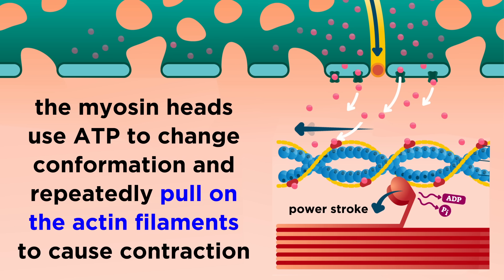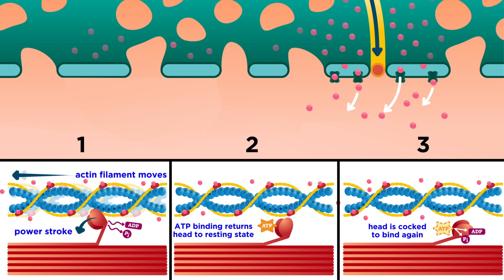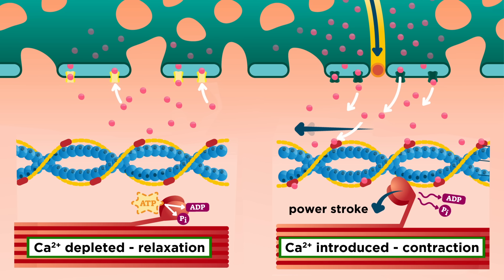In this process, the myosin heads will pivot and bend, pulling the actin filament along and using ATP in the process. The two positions possible for the heads allow it to pull, detach, change position, bind, pull, detach, and so forth many times, until contraction is complete. As calcium levels deplete, troponin returns to its original shape, tropomyosin blocks actin's binding sites once more, and the muscle fiber relaxes.